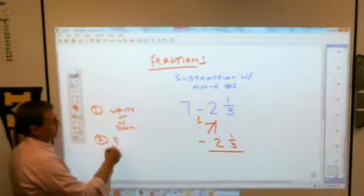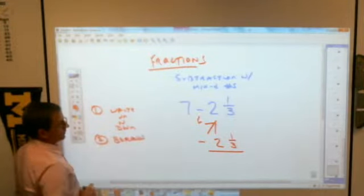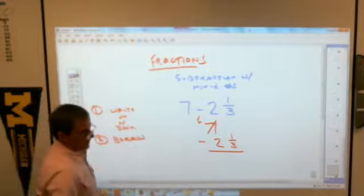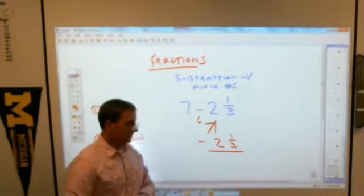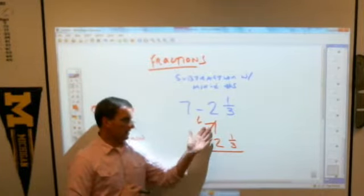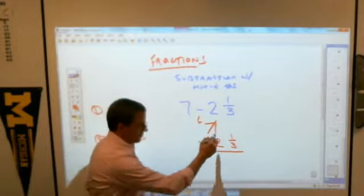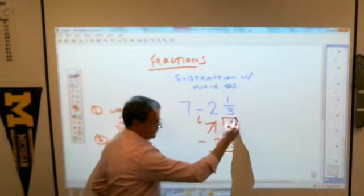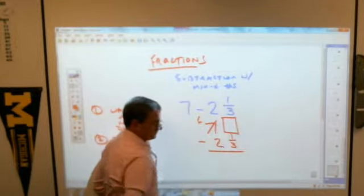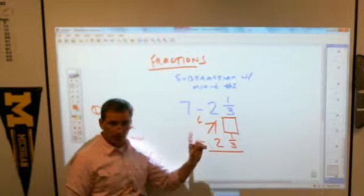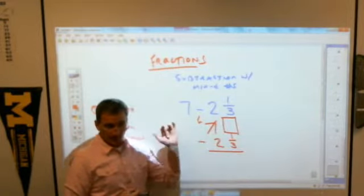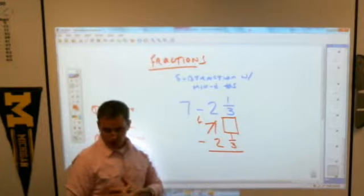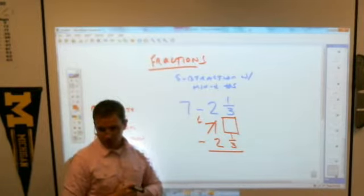I'm going to have to borrow. And then the question of the universe is, if I have this borrowing from the 6, what fraction am I going to make over here? Knowing that that fraction has to be 1, because that's what I took away from there.